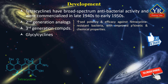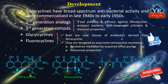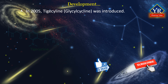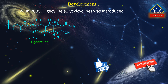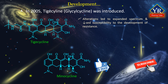Glycylcyclines, for example tigecycline, and fluorocyclines are new classes of antibiotics derived from tetracycline. These tetracycline analogues are specifically designed to overcome two common mechanisms of tetracycline resistance, namely resistance mediated by acquired efflux pumps and ribosomal protection. In 2005, tigecycline, the first member of a new subgroup named glycylcyclines, was introduced to treat infections resistant to other antimicrobials. Although structurally related to minocycline, alterations to the molecule resulted in its expanded spectrum of activity and decreased susceptibility to the development of resistance compared with other tetracycline antibiotics.